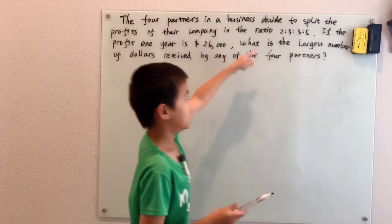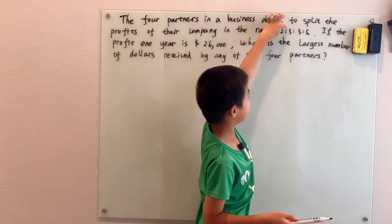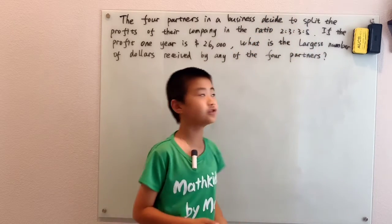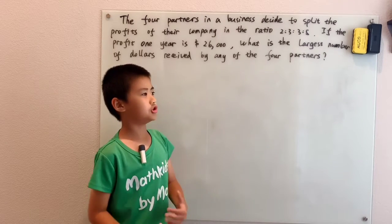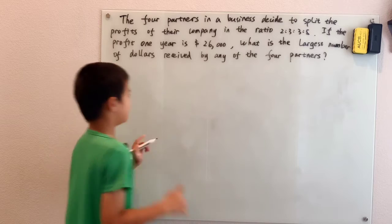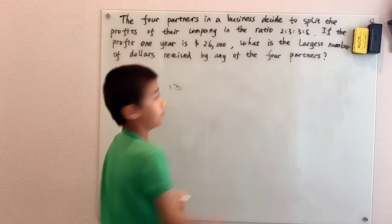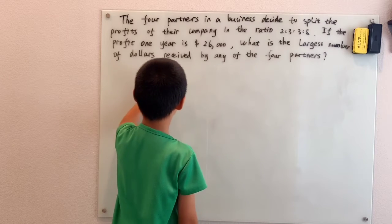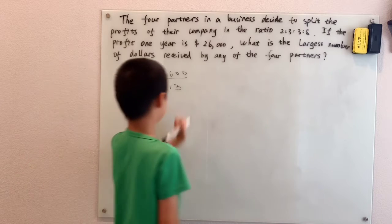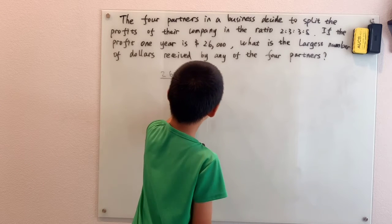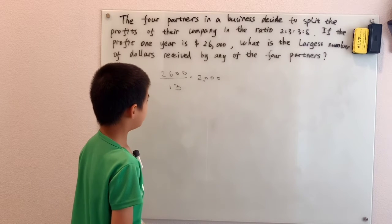The number of parts - there's 2 parts, 3 parts, 3 parts, 5 parts, so that makes 2 plus 3 plus 3 plus 5, which is 13 parts altogether. If you have 13 parts and you have $26,000 to divide up among these 13 parts, if you do it fairly, you get $2,000 for each of these parts.